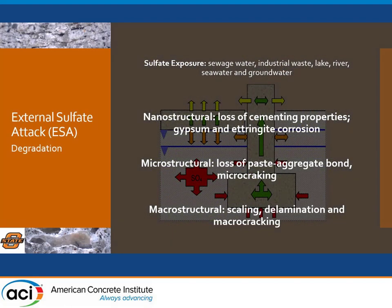What does that mean practically? At the nanostructural level, we see loss of cementing properties through gypsum and ettringite corrosion. But at the microstructural and macrostructural level — the loss of paste-aggregate bond and micro-cracking — what we actually see during a visual condition survey is scaling, delamination, and macro cracking.